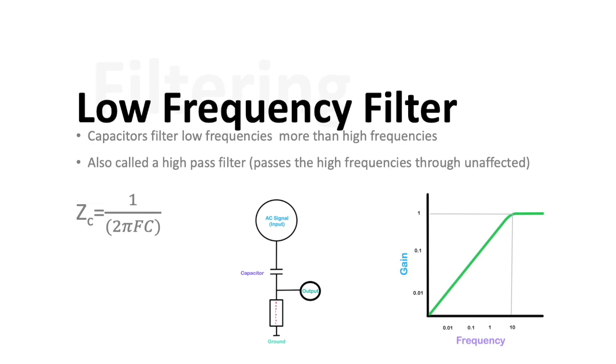So now, I would like to talk a bit about the filtering that goes on to the raw EEG signal. There is a low-frequency filter, which is essentially an analog circuitry, a capacitor. Capacitors will block low frequencies more than high frequencies, or filter them out of the signal. They're also called a high-pass filter because they pass the high frequencies through unaffected while filtering out the low frequencies, or the slow frequencies.